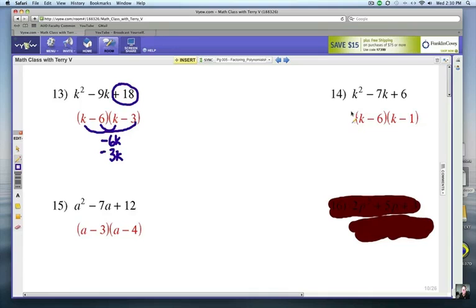Number 14. K and k. And again, it's a positive third term but a negative second term. And notice how negative 6 times negative 1 gives you your positive 6. So your sign there kind of has a little clue. And you want to get negative 7k for your middle term. And that comes from the insides and your outsides which will give you negative 7k.